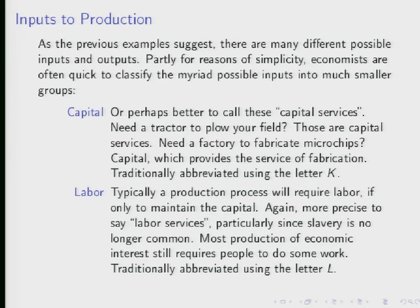The abbreviation for labor is L. A little less naturally, the abbreviation for capital is K. The reason we use K is that it comes from Karl Marx, who wrote Das Kapital, and introduced some of this notation. A big chunk of that book is a restatement of the classical economists' views, perpetuating and formalizing the division of inputs into labor, capital, and land.